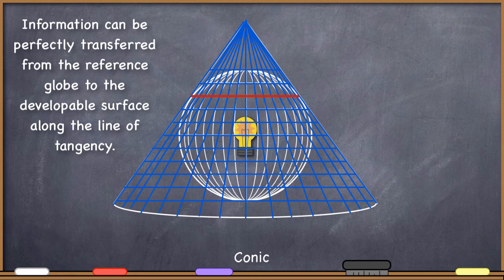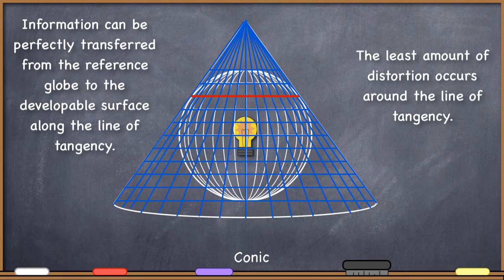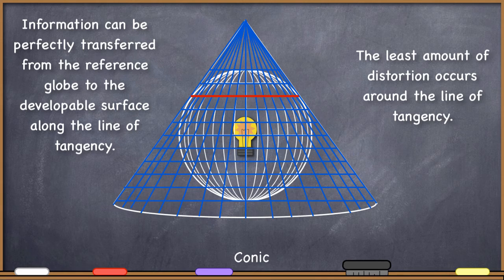Distortion of all kinds also happens to be least around the standard parallels if the line of tangency falls on a line of latitude. You can see this phenomenon in this conic projection representation here — look at the distance between the white lines, which represent the actual lines of latitude and longitude, and the blue lines, which represent the lines of latitude and longitude as they have been projected onto the cone. Notice that as you get to the top and bottom of the cone, there's a great distance between the projection and the reference globe lines, meaning a lot of distortion in those areas. But there's the least distance around the line of tangency, meaning the least amount of distortion in that particular area of the map.